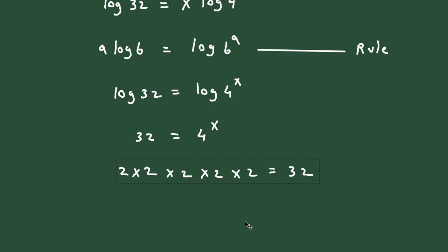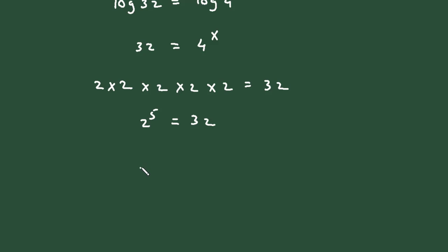That means 2 to the power 1, 2, 3, 4, 5. So we can write 2 to the power 5 in place of 32.